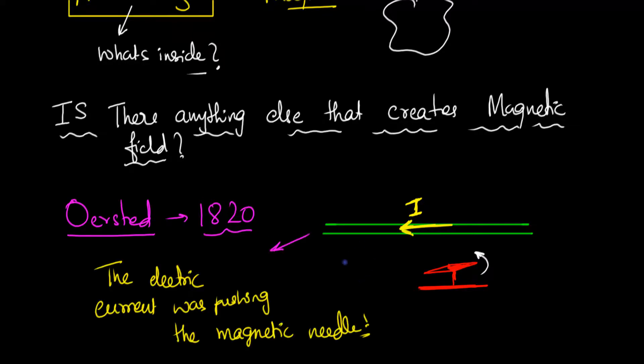Well, you could ask why? Why was the magnetic needle being pushed by the current? Well, you can never answer why, but you can ask yourself a deeper question. What's going on over here? Because there's no contact over here. What must be going on?